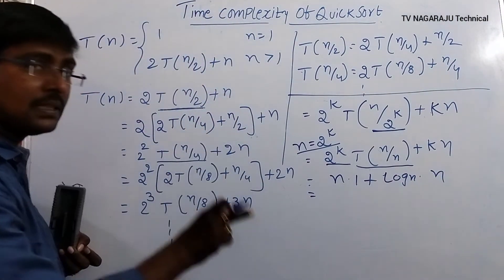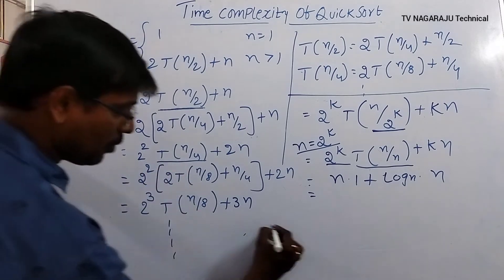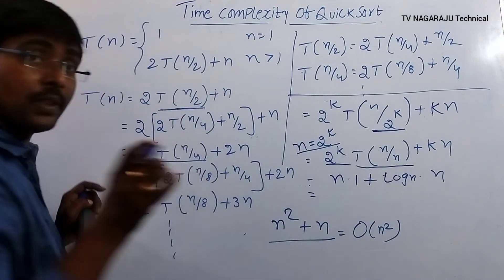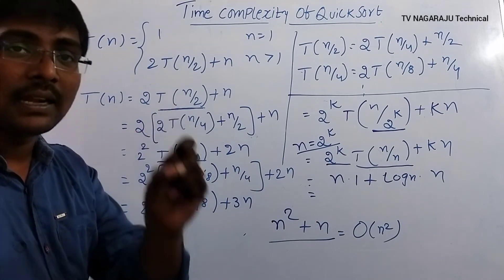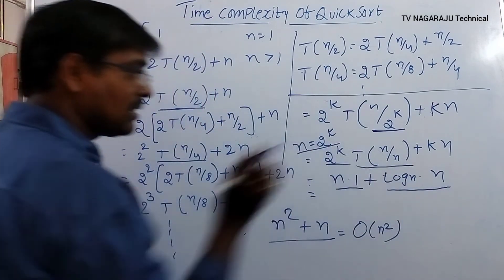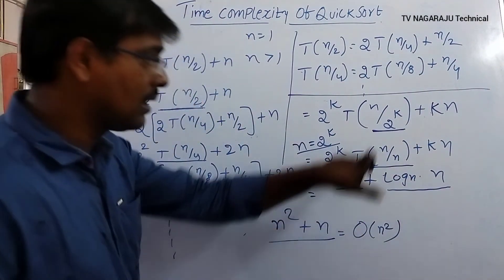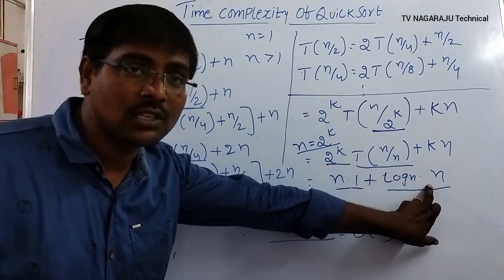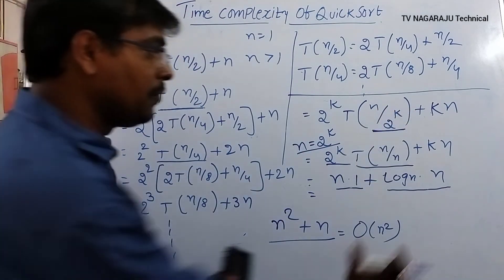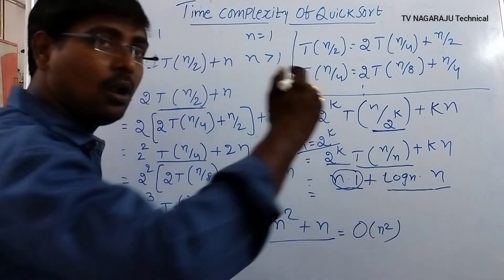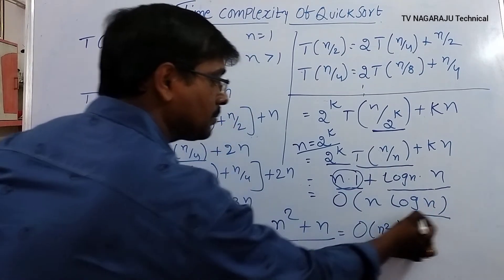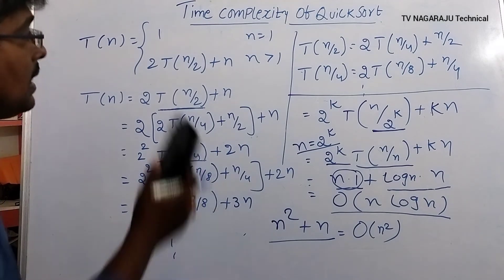So T(n) = n + n·log n. Using Big O notation, in a sum we consider only the term with the maximum time complexity. n is one term, n·log n is another — n·log n has the larger complexity. Therefore, the time complexity of quicksort in the best case is O(n log n).